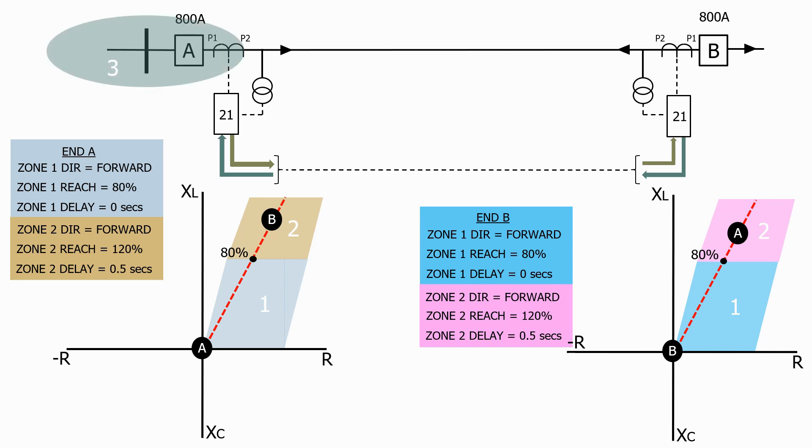Let's firstly add a reverse zone at end A. What are the characteristics? Well, the direction is obviously reverse.